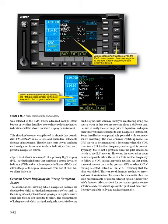However, the error arises upon missed approach, when the pilot selects another frequency to follow a VOR missed approach routing. At that point, some units revert back to the previous GPS or other RNAV routing selected instead of the VOR frequency that the pilot just picked. This can result in gross navigation errors and loss of obstruction clearances. In some units, this is a shop programmable or jumper selected option. Check your unit's features. Always check for correct navigation source selection and cross-check against the published procedure. Be ready and able to fly and navigate manually.